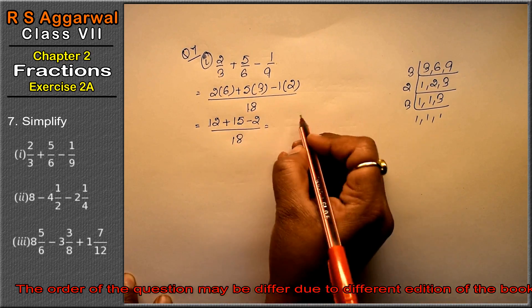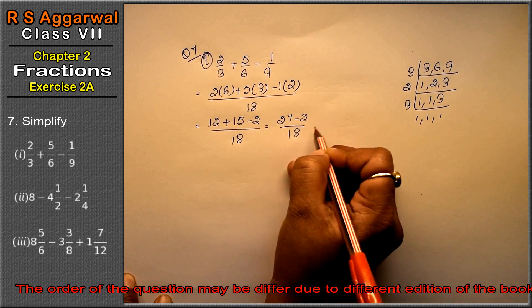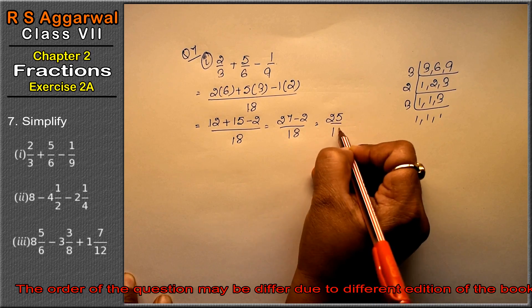Now if you add these two, then 27 minus 2 upon 18, so it comes to 25 upon 18.